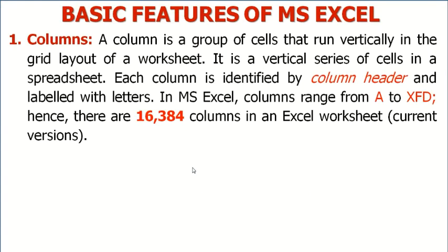Let's look at the first one: column. A column is a group of cells that run vertically in the grid layout of a worksheet. It is the vertical series of cells in a spreadsheet. Each column is identified by a column header and labeled with letters. In MS Excel, columns range from A to XFD, hence there are 16,384 columns in an Excel worksheet.